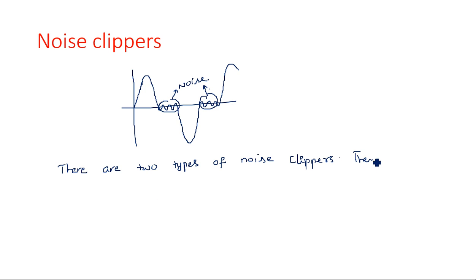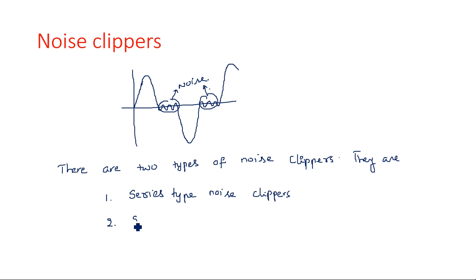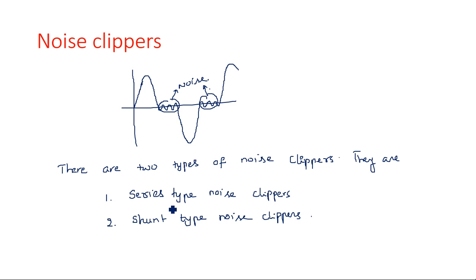There are two types of noise clippers: first, series type noise clippers, and second, shunt type noise clippers. In series type, the output is in series with the nonlinear device, which is a diode. In shunt type, the output is in parallel with the nonlinear device, which is also a diode. That is why they are called series type and shunt type respectively.